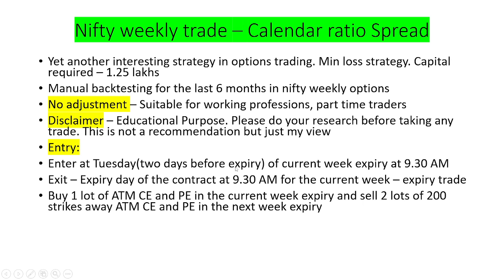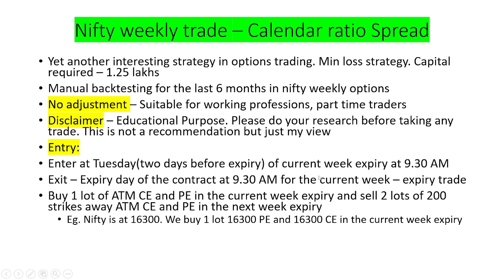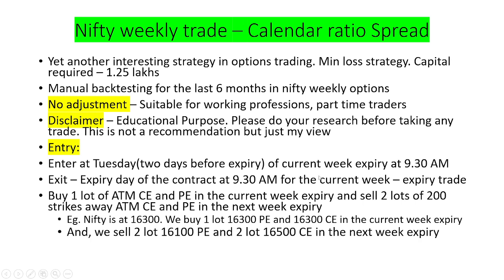The strategy is: we will be buying one lot of ATM call and put in the current week expiry, and we are selling two lots of 200-strikes-away ATM call and put in the next week expiry. For example, if Nifty is trading at 16,300, then we buy one lot of 16,300 put and call for the current week and sell two lots of 16,100 put and two lots of 16,500 call in the next week expiry.